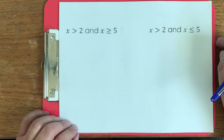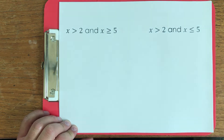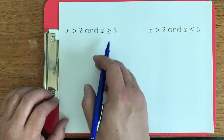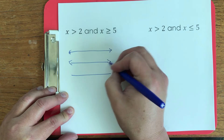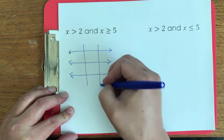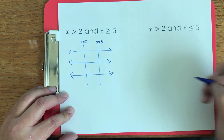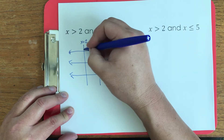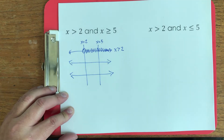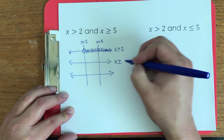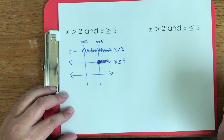Now let's see how we use these logical operators in inequality statements. If something is over two AND over five, is there an easier way to say this? We want to graph both inequalities. This line denotes x equals two, and this line denotes x equals five. To graph x greater than two, we put an open circle around two and shade everything to the right. To graph x greater than five, we do a closed circle and shade everything to the right of five.